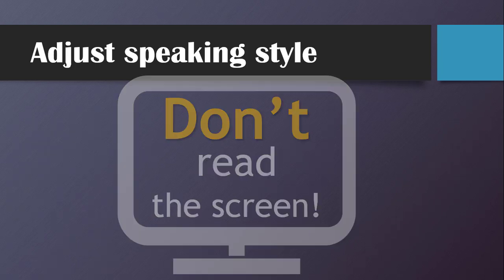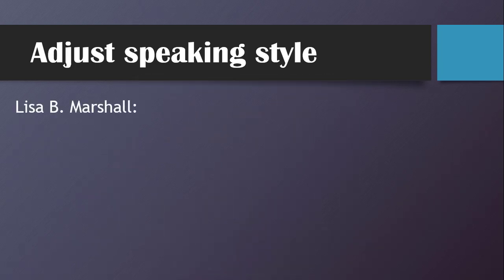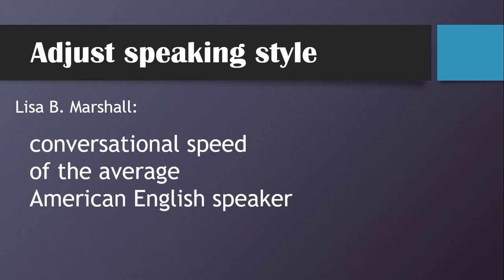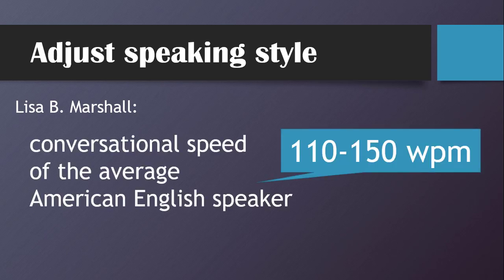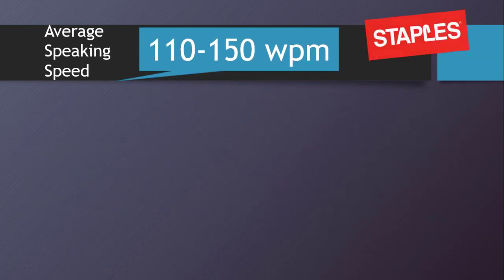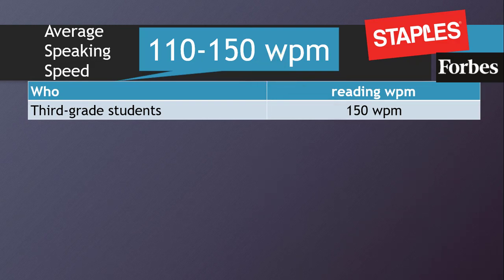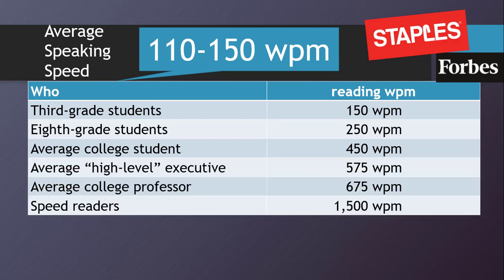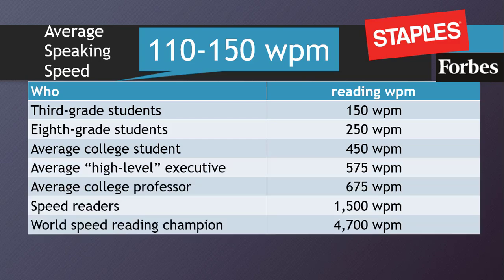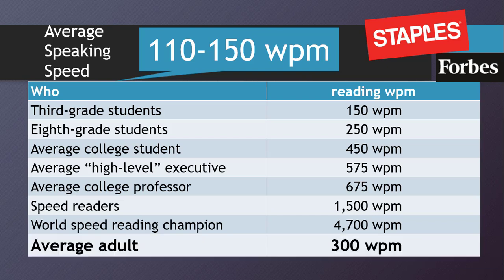Professional speaker and podcast host Lisa B. Marshall reports that the conversational speed of the average American English speaker is approximately 110 to 150 words per minute. Compare that with results of a speed reading test sponsored by Staples, referenced in a 2012 Forbes magazine article. The average reading speed for third graders was 150 words per minute—at the top of the average speaking speed range. And if you are speaking to anyone with higher than a third grade education, their reading speeds will significantly outpace your speaking speed. The average adult reads at about 300 words a minute. That's another reason to design your aids to have fewer words and more visual images.